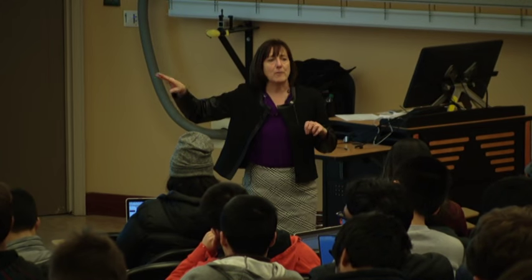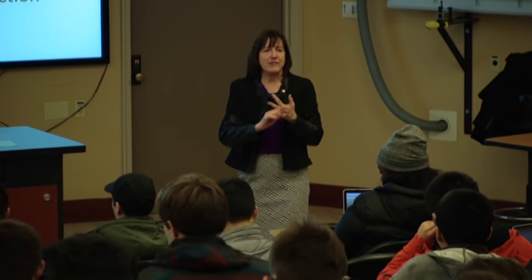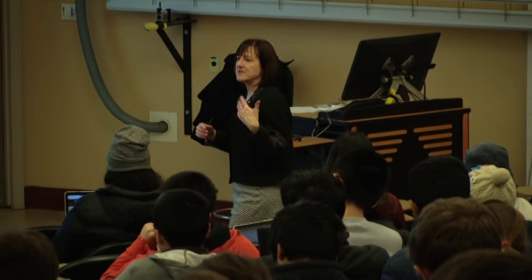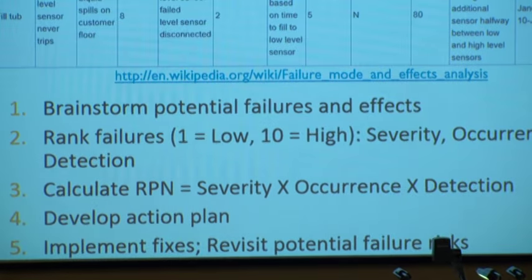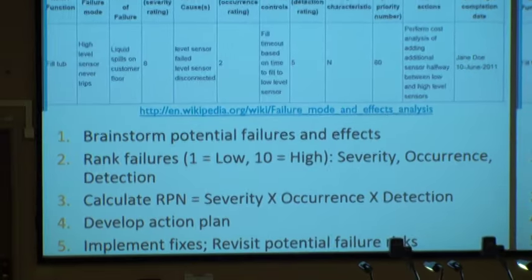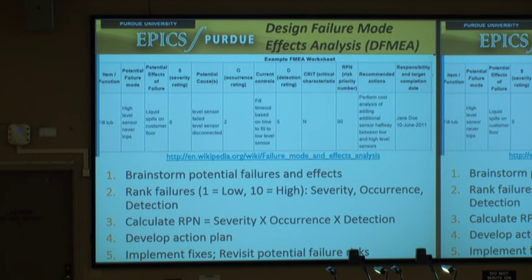You brainstorm all potential failures and rank them based on the severity of what will happen should it occur, how frequently it will occur, and how easy it is to detect. If something is really difficult to detect, it actually poses a lot more risk than things that are easily identifiable. You multiply those factors and get an RPN — a Risk Priority Number — and you can develop an action plan. These are really good things to do once you have some design and want to evaluate potential risks.